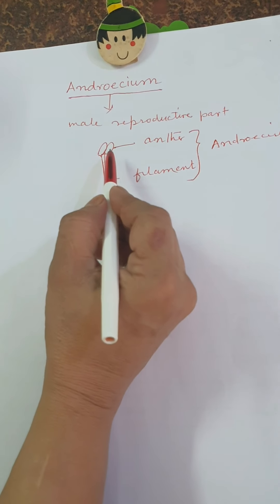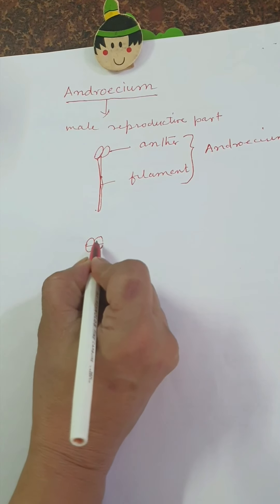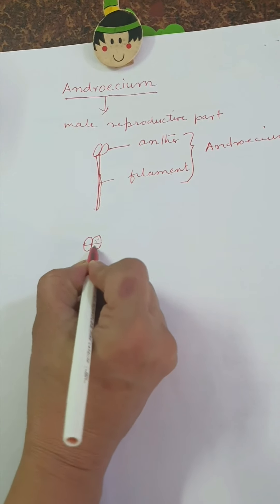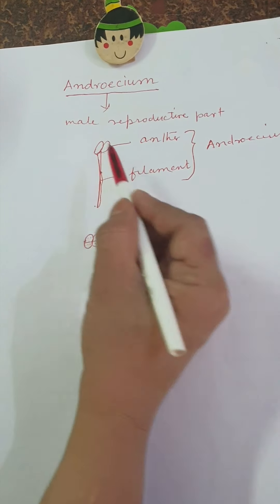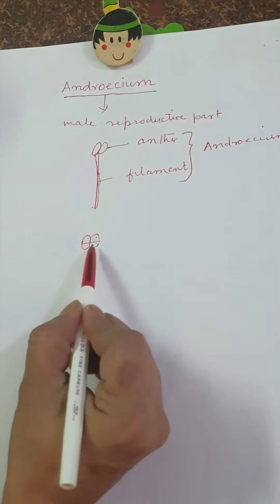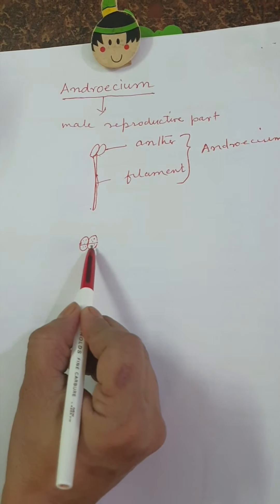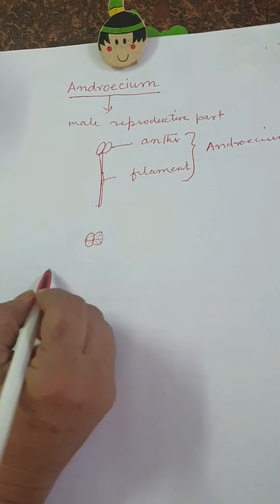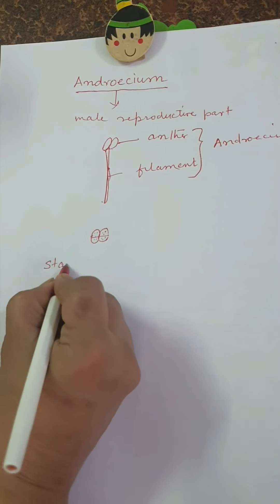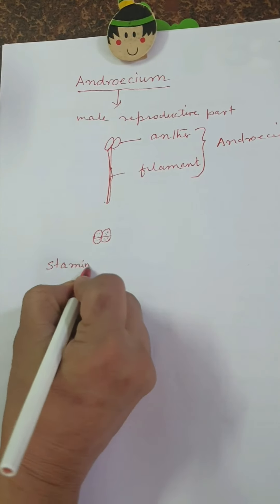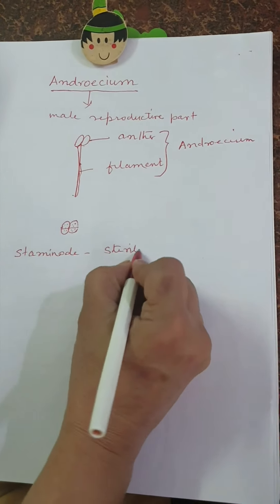The anther is usually bi-lobed with four chambers, which are known as pollen sacs. In the pollen sacs, pollen grains are produced. Each lobe has two chambers, and in these chambers pollen grains are produced. A sterile stamen is known as a staminode.